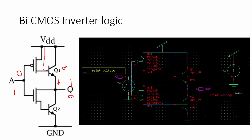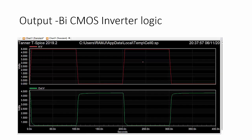This is a schematic representation drawn in S-Edit using Tanner. Next you can see the output of this BiCMOS inverter. The output looks like this: if you are giving 1, we will be getting 0; 0 means 1. This is the output. The procedure for how to draw the BiCMOS inverter using S-Edit follows.